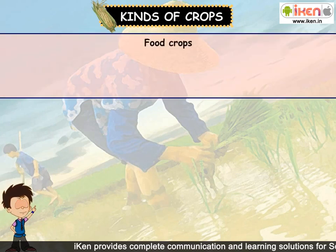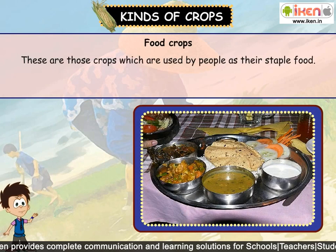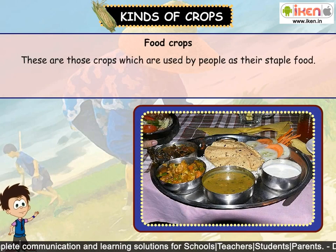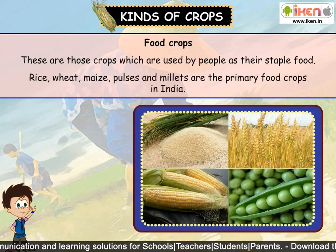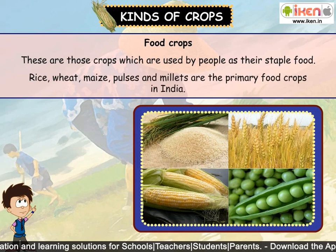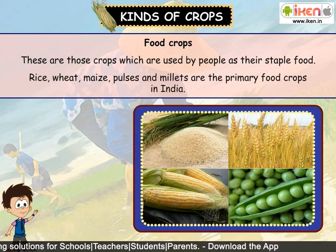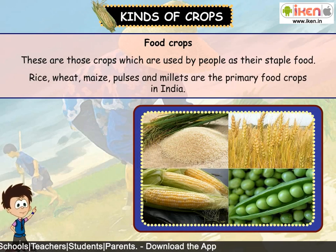Food crops: These are those crops which are used by people as their staple food. Rice, wheat, maize, pulses and millets are the primary food crops in India.